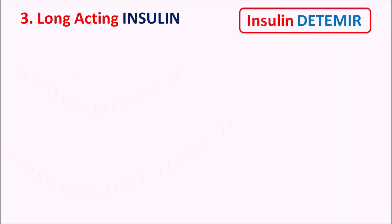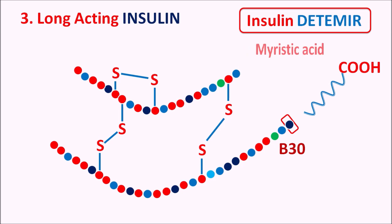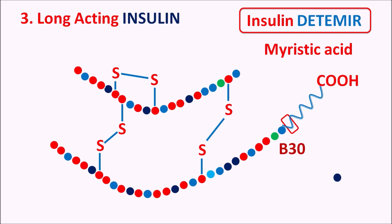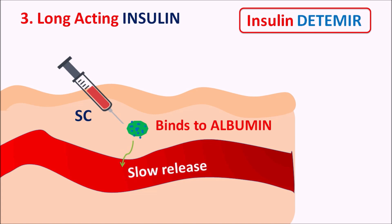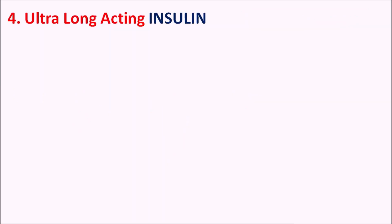In insulin detemir, the terminal amino acid at B30 is deleted and a fatty acid chain — myristic acid — is added in its place. When given subcutaneously, the fatty acid binds to albumin, from which insulin is slowly released. Even after absorption, detemir binds to albumin in plasma and is slowly released, making it a long-acting insulin preparation.